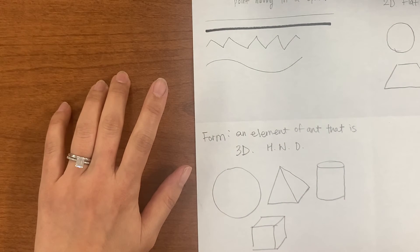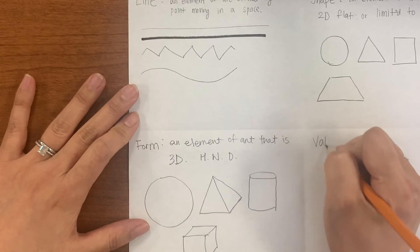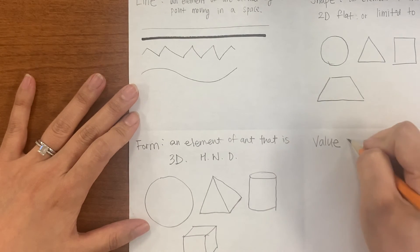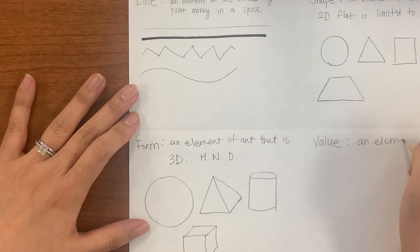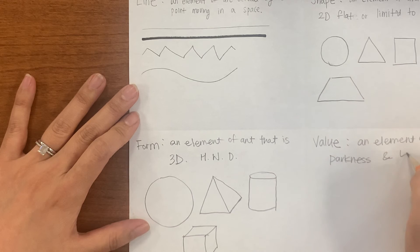Let's go ahead and move on to the fourth one, which is going to be a value. So I'm going to write down value here. And we've done this before. It's an element of art. And it has darkness and lightness of a color.